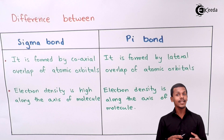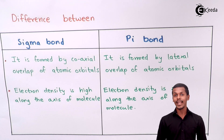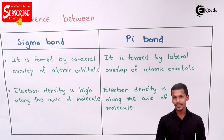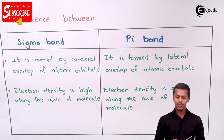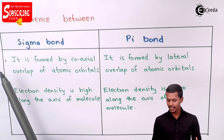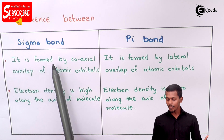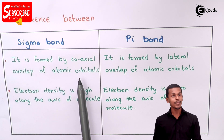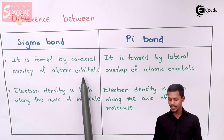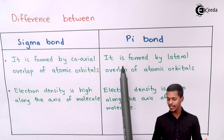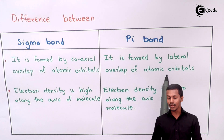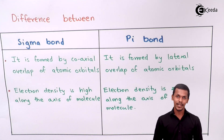So now let us start with what is a sigma bond and what is a pi bond and how do they form. Sigma bond is formed by the coaxial overlapping of atomic orbitals, while the pi bond forms by the lateral overlapping of atomic orbitals.